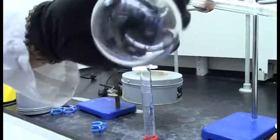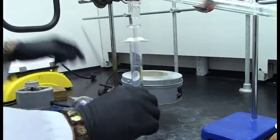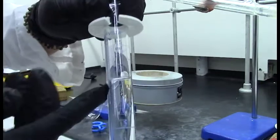Put the boiling chips into the round bottom flask, and then fill it with the mixture. As a general rule, it should be filled to no more than two-thirds of the flask.